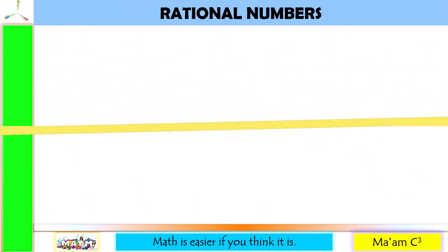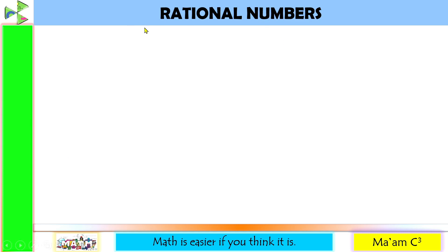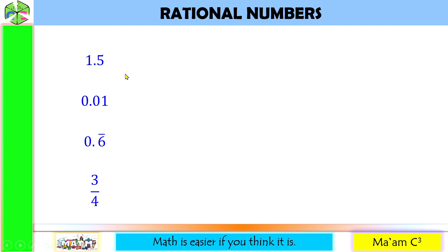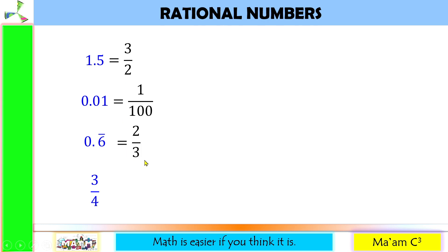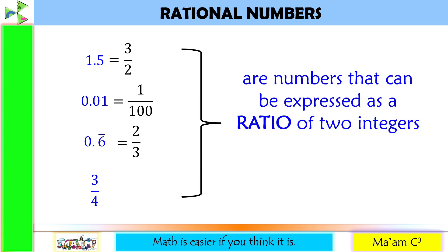Let us recall our answers in our previous activity. The rational numbers we had are 1.5, 0.01, 0.6 with a vinculum above the 6, and 3 over 4. 1.5 can be expressed as 3 over 2. 0.01 can be expressed as 1 over 100. 0.6 repeating can be expressed as 2 over 3. And 3 fourths is already in fraction form. What is common among these numbers? These are numbers that can be expressed as a ratio of two integers — that is why it is called a rational number.